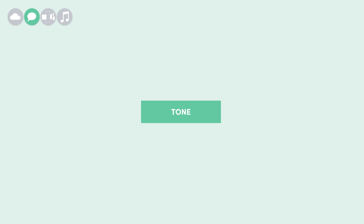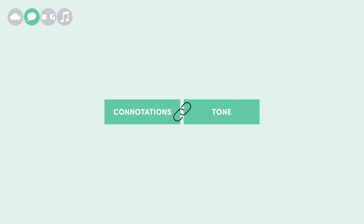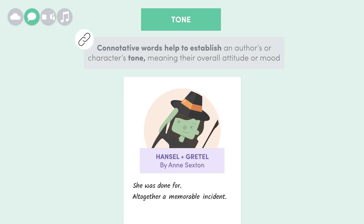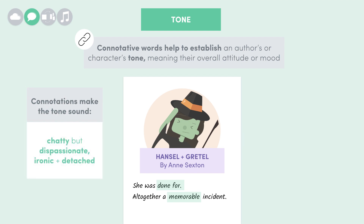Now, let's quickly talk about tone. Connotative words are important as they help to establish an author's or character's tone, meaning their overall attitude or mood. In our extract, the connotations of words like 'done for' and 'memorable' make Sexton's tone sound chatty but dispassionate, ironic and detached. You can often learn a lot from tone. It might tell you about an author's attitude towards something.